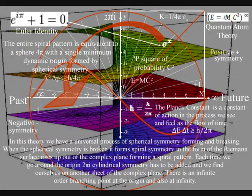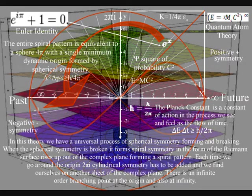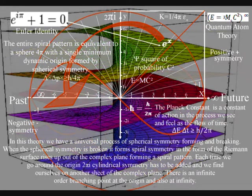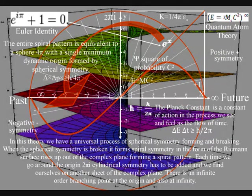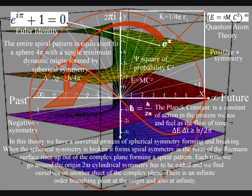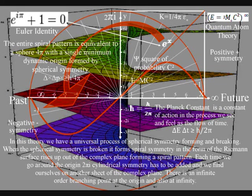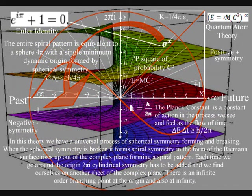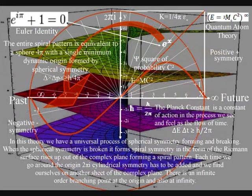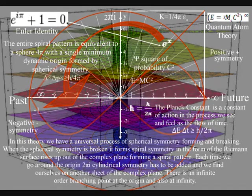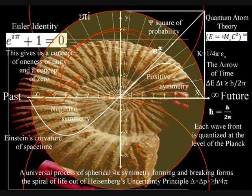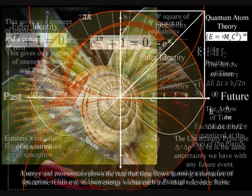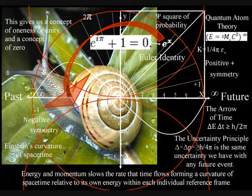At each rotation of the origin, two pi of cylindrical symmetry has to be added, and we find ourselves on another sheet of the complex plane. This spiral symmetry forms line symmetry representing the timeline or arrow of time. The entire spiral pattern is equivalent to a sphere — four pi — with a single minimum dynamic origin formed by spherical symmetry. When the spherical symmetry is broken, it forms the imperfect spiral symmetry of life that is visible in nature, because if the quantum wave particle function or probability function is reformulated as a linear vector, then all the information points to each new vector being formed by adding the two previous vectors together.